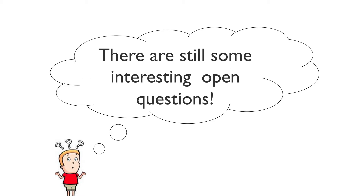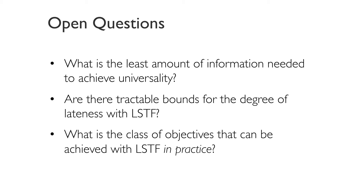But there are still some interesting open questions. We showed that universality is always achievable under omniscient initialization and never under black box initialization — so what is the least amount of information needed to achieve universality? Second, can we come up with tractable bounds on the degree of lateness with LSTF when there are three or more congestion points? And finally, can we formally define the scope of using LSTF in practice — is there a class of objectives that can be achieved with LSTF, and what cannot?